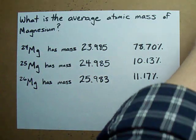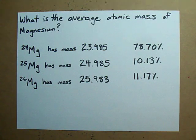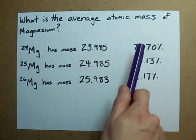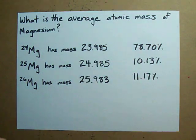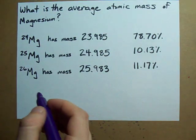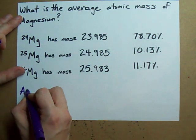And Magnesium-26, which has this mass and is 11.17% of all magnesium. If you're given all the masses and given all the abundances, it's one of the easiest questions in the world. All you need to do to find the average atomic mass